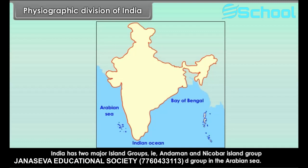India has two major island groups: the Andaman and Nicobar Island Group in the Bay of Bengal, and the Lakshadweep Island Group in the Arabian Sea.